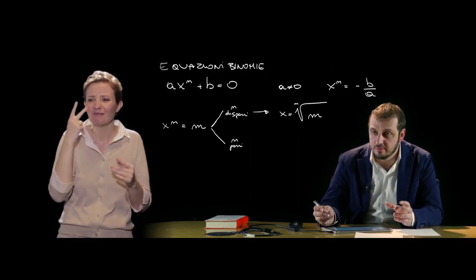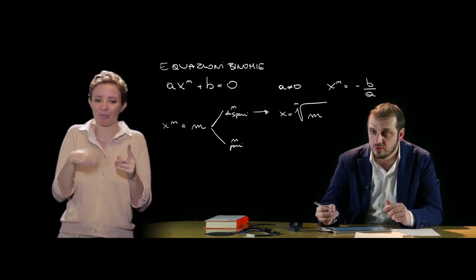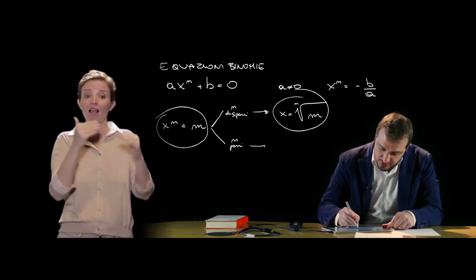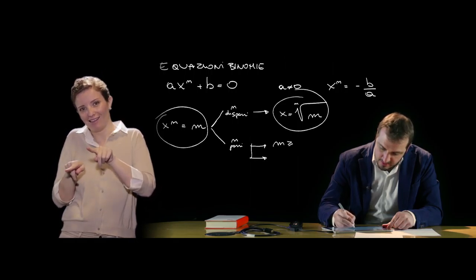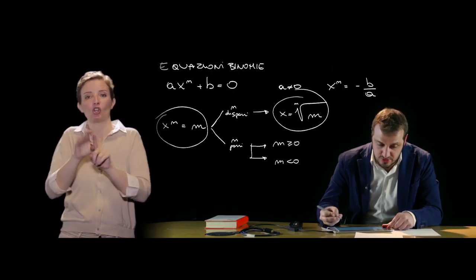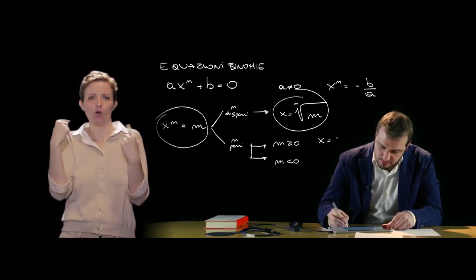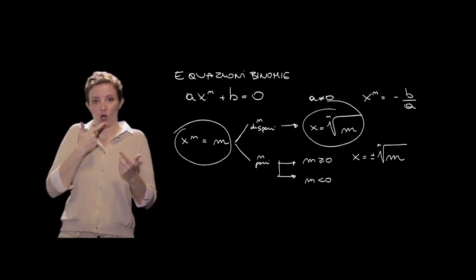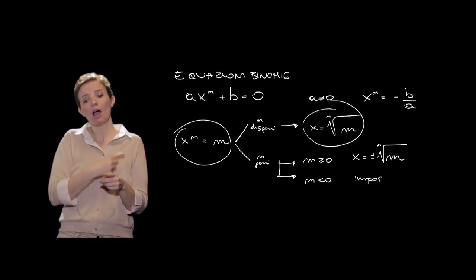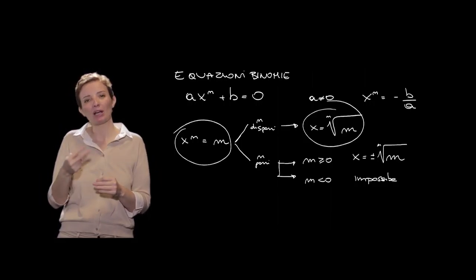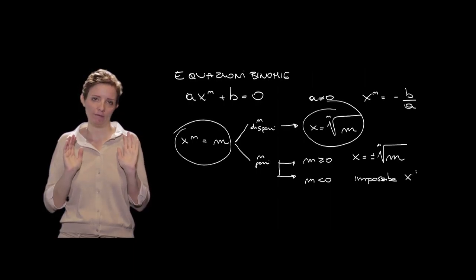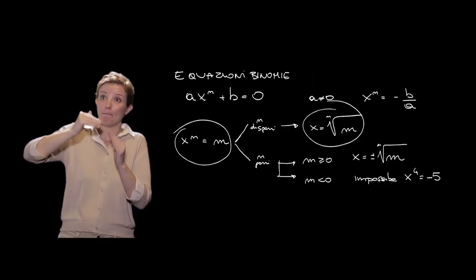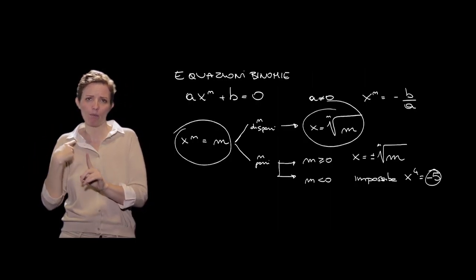Come già visto con i radicali, l'operazione inversa del radicamento è il potenziale ennesimo. Per quanto riguarda n pari, dobbiamo distinguere ulteriormente in base al valore di m. Se m ≥ 0, la soluzione è x = ±√(m). Se invece m < 0, come già detto più volte, la soluzione non esiste: ad esempio x^4 = −5 è impossibile, perché una potenza di esponente pari dà sempre un numero positivo.